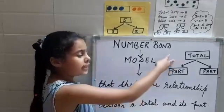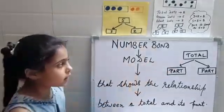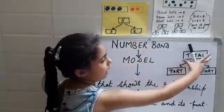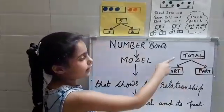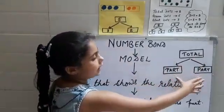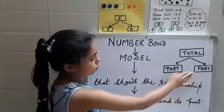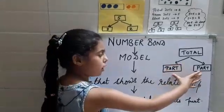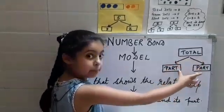It has three boxes. In the upper box, we write the total number, and in the lower boxes, we write its parts.